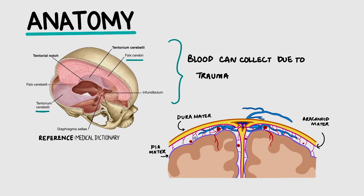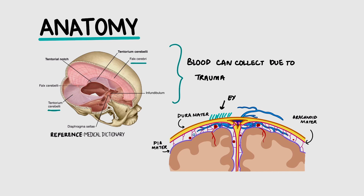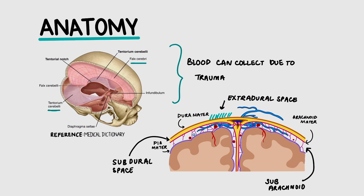Between these layers, we have spaces where blood can collect due to trauma. The space above the dura mater is known as the extra-dural space. Then we have the sub-dural space below, and the sub-arachnoid space below the arachnoid mater.